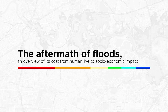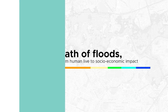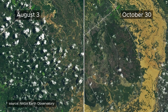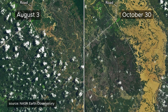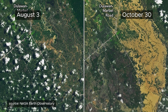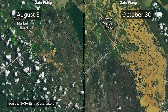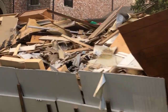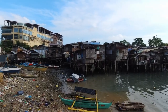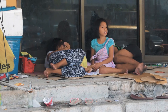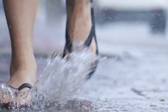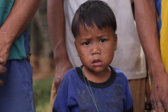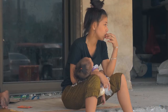The aftermath of floods — an overview of its cost from human life to socioeconomic impact. Floods can occur anytime, anywhere, and can cause unimaginable loss of life and property. The pouring rain and rising water levels can cause rivers to overflow, bringing catastrophic consequences. It's hard to wrap our heads around the number of lives lost due to floods. Floods can happen suddenly and with little warning, leaving people with little to no time to evacuate and seek safety — families getting displaced and separated, children losing their parents, and homes turning into debris.